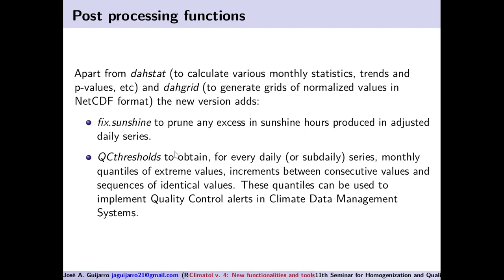Apart from DA-stat, which calculates various monthly statistics, trends, and p-values, and DA-grid, which generates grids of normalized values in NetCDF format, the new version adds other post-processing functions. These include fixed sunshine to prune any excess of sunshine hours produced in adjusted daily series, and QC thresholds to obtain for every daily or sub-daily series monthly quantiles of extreme values, increments between consecutive values, and sequences of identical values. These quantiles can be used to implement quality control alerts in climate data management systems.